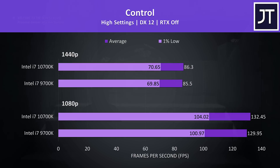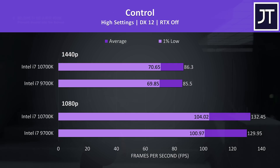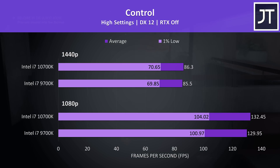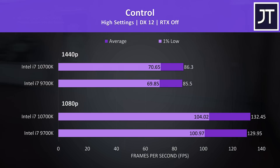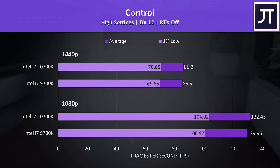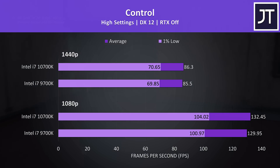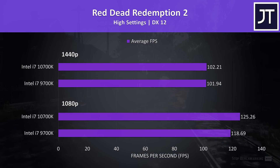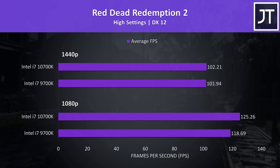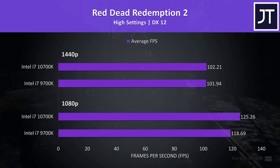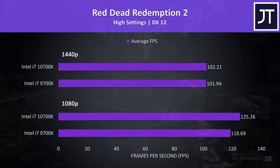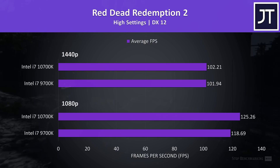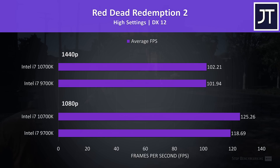Control was tested by performing the same test pass through the game on both machines, and as a seemingly GPU-heavy test there wasn't much difference, with average FPS just 2% faster on the 10700K at 1080p. Red Dead Redemption 2 was tested using the game's benchmark tool, and there was a 5% gain to average FPS at 1080p. At 1440p where the processor typically matters less, there's essentially no difference.